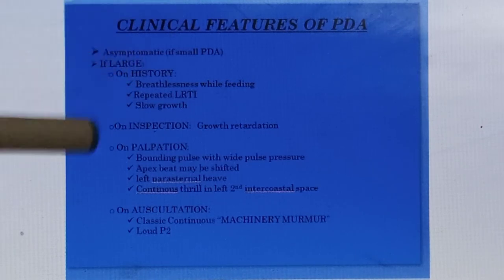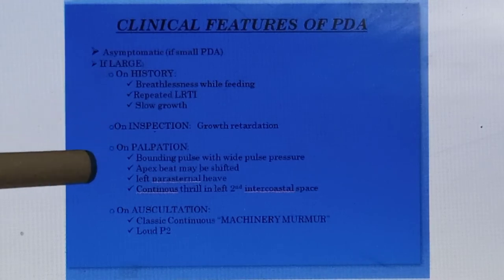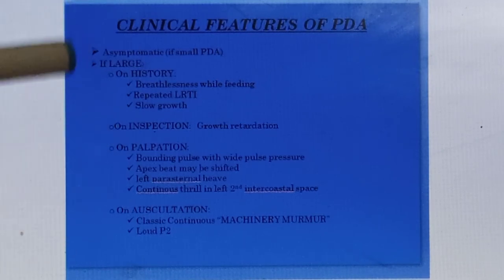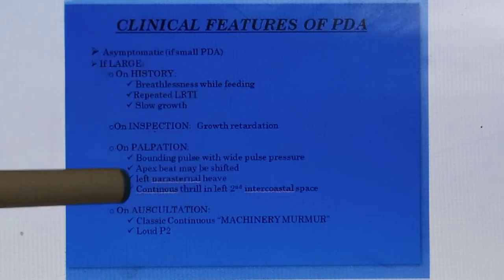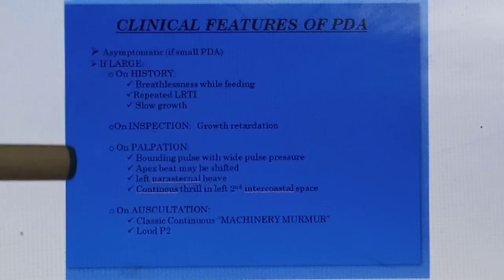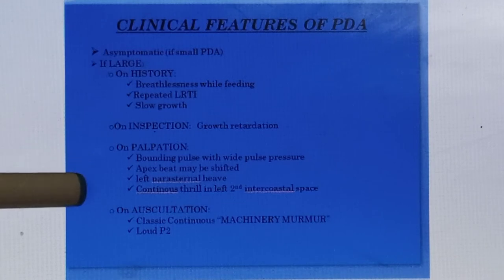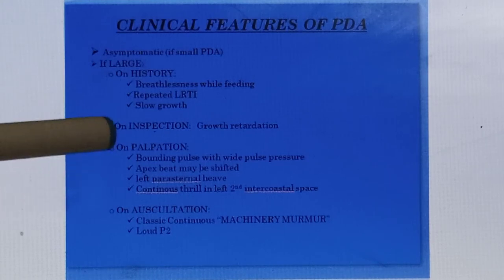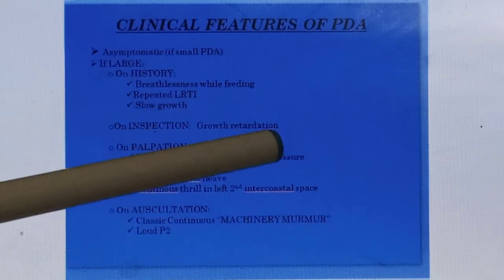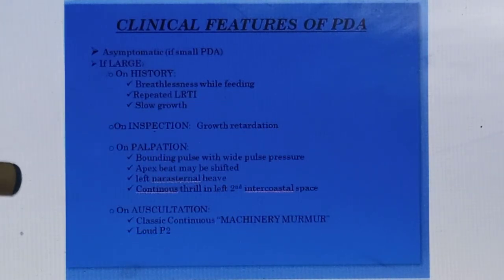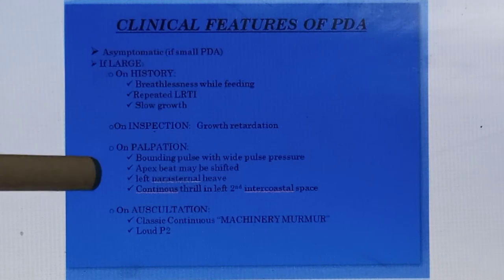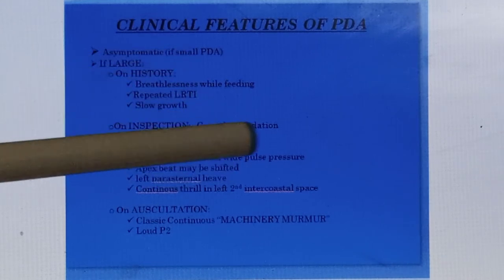On history these points are very important. On inspection there is growth retardation or slow growth. On palpation there is bounding pulse with wide pulse pressure. Because of the continuous flow of blood from the aorta back into the pulmonary arteries, less blood enters into the systemic circulation, resulting in less perfusion to the viscera and bounding weak pulses. This widened pulse pressure is because of more systolic pressure — when there is slow blood supply to various organs there is a compensatory increase in systolic blood pressure and contractions become more forceful.